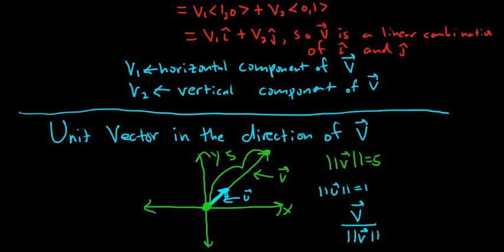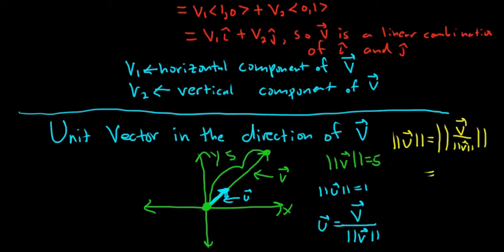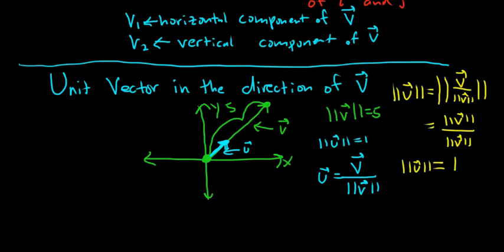Whenever you take the magnitude of this vector u, you should get 1. The magnitude of u equals the magnitude of v divided by the magnitude of v — the magnitude of v in the numerator and the same in the denominator cancel, giving you 1, as long as v is not 0. So u is a unit vector. This process of taking a vector and making it have magnitude 1 is called normalizing.